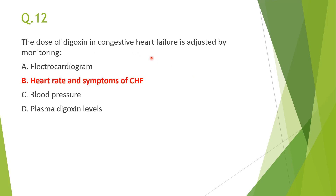Next question: dose of digoxin in CHF is adjusted by monitoring — answer B is correct: heart rate and symptoms of CHF. Digoxin produces a decrease in heart rate and improvement in CHF symptoms. Rather than ECG, plasma digoxin level, or blood pressure, heart rate and symptom relief guide dose adjustment to avoid toxicity.